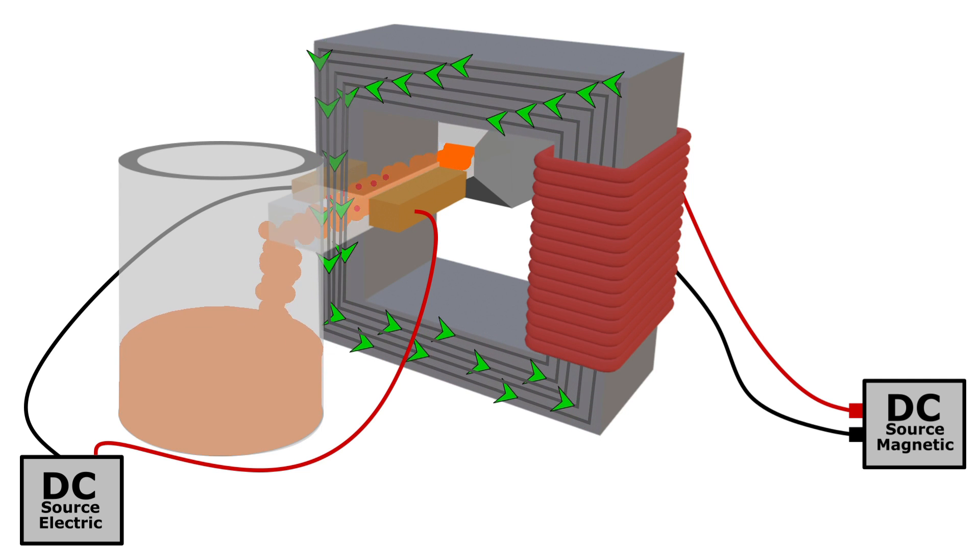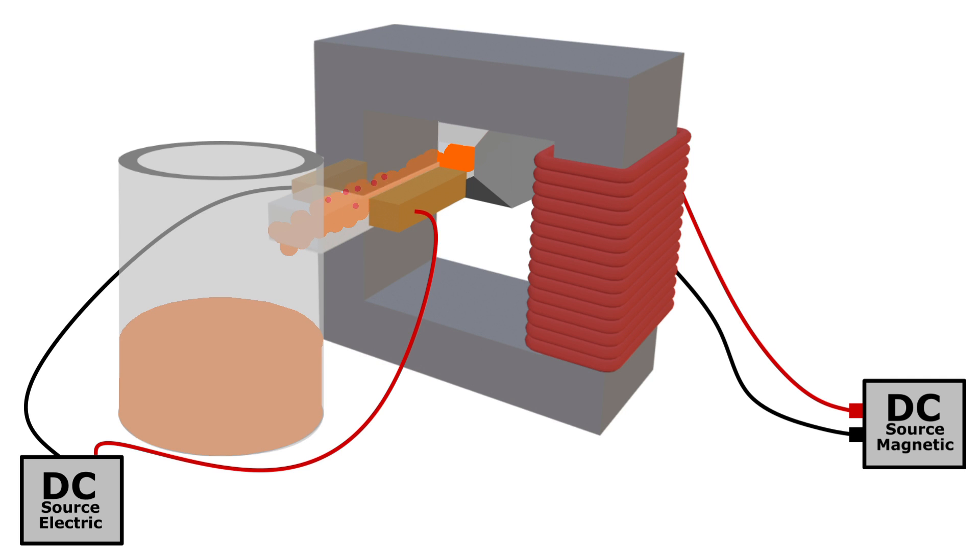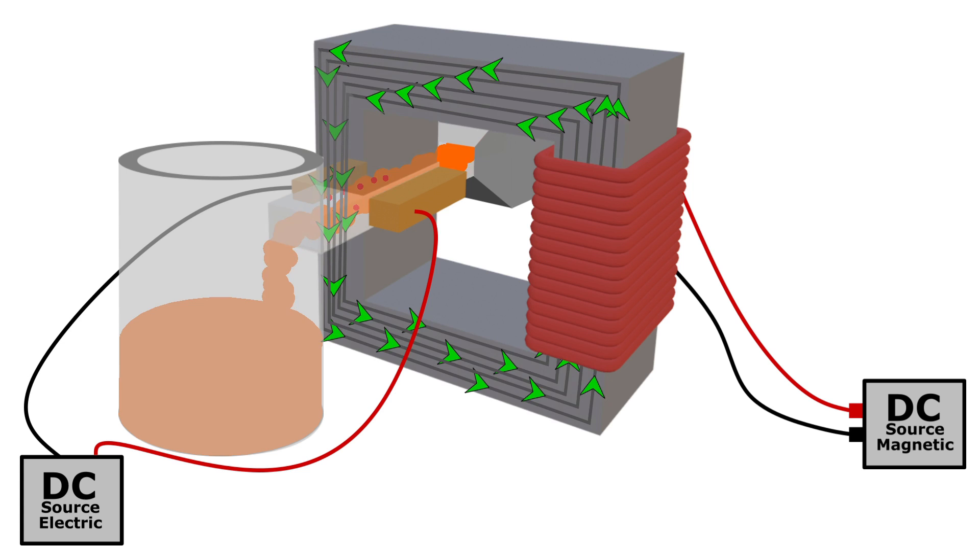If we turn off the magnetic field, the flow will stop, even if the current is still flowing. Turn it back on, the flow starts again.